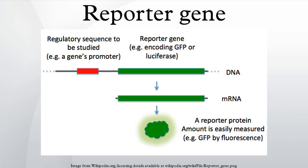As a result, the reporter gene's expression is independent of the gene of interest's expression, which is an advantage when the gene of interest is only expressed under certain specific conditions or in tissues that are difficult to access. In the case of selectable marker reporters such as CAT, the transfected population of bacteria can be grown on a substrate that contains chloramphenicol. Only those cells that have successfully taken up the construct containing the CAT gene will survive and multiply under these conditions.